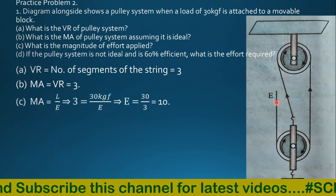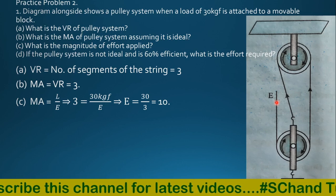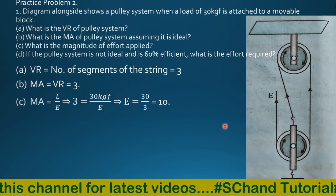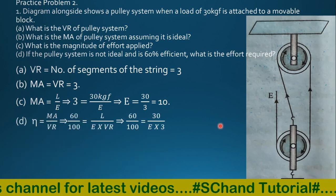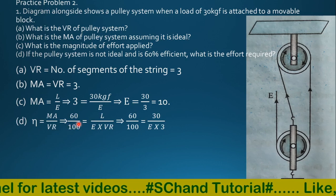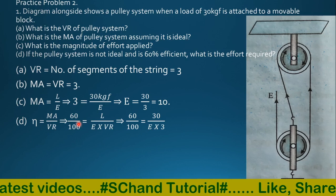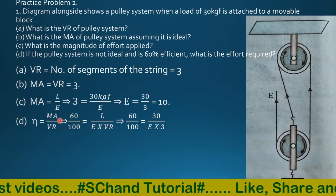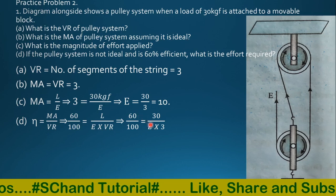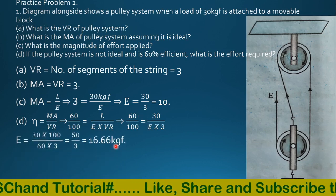Mechanical advantage equals load over effort, which is 3 equals 30kg force over E, so E equals 30 over 3, that is 10. Efficiency equals mechanical advantage over velocity ratio, given as 60%. So 60 over 100 equals L over E into velocity ratio, and effort comes to be 16.66kg force.